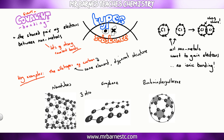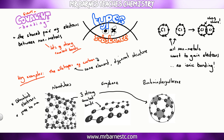All three of these allotropes — nanotubes, graphene, and buckminsterfullerene — have three strong covalent bonds. That means all of them have delocalized electrons that are free to move, and therefore they all conduct electricity. In particular, graphene is so tiny and small that it can be used in circuits.